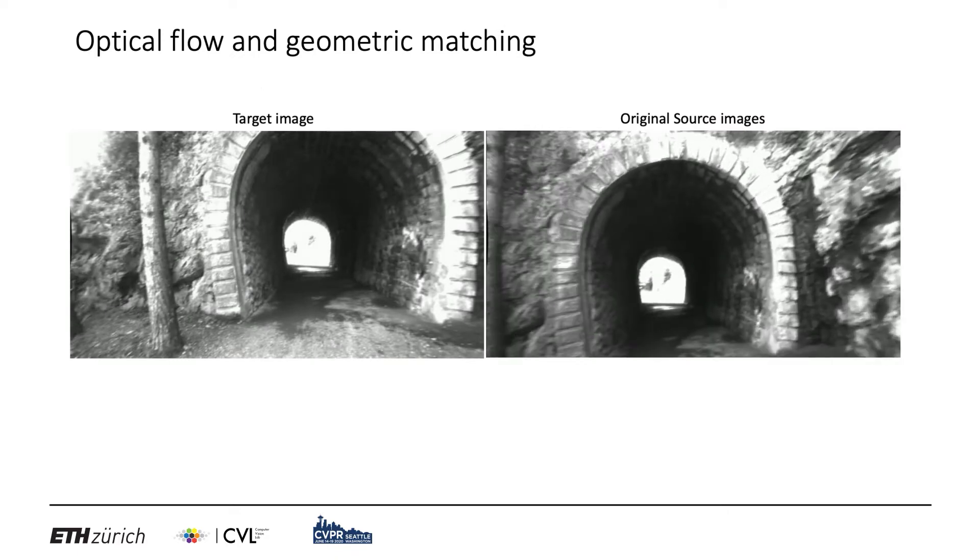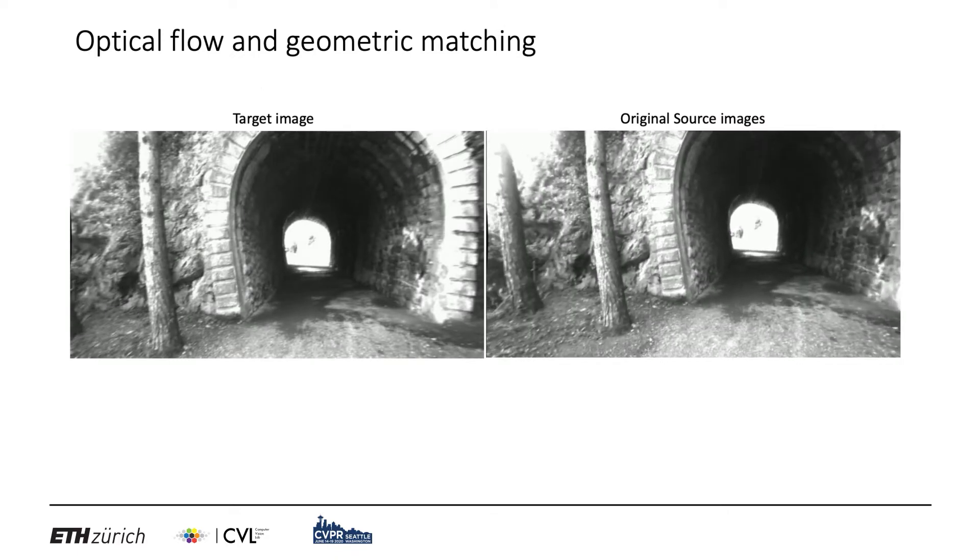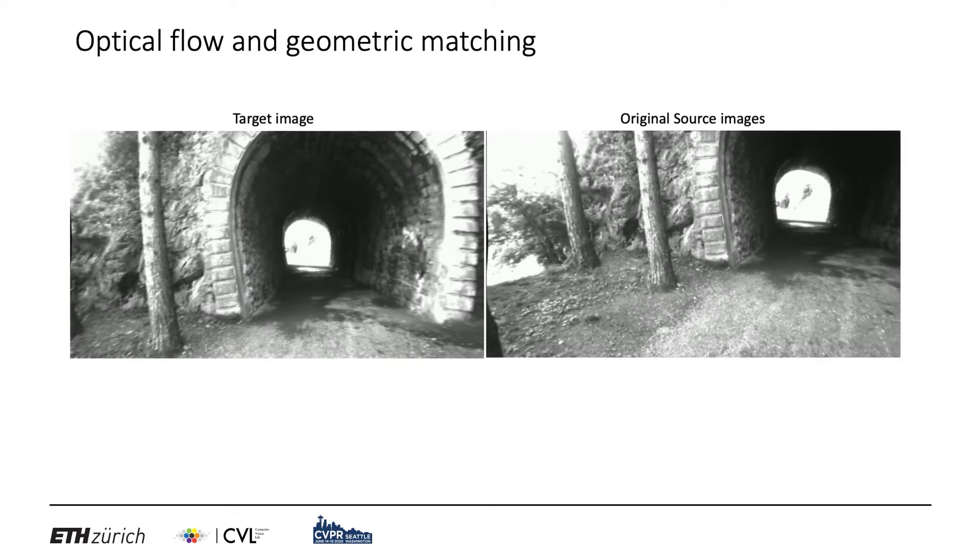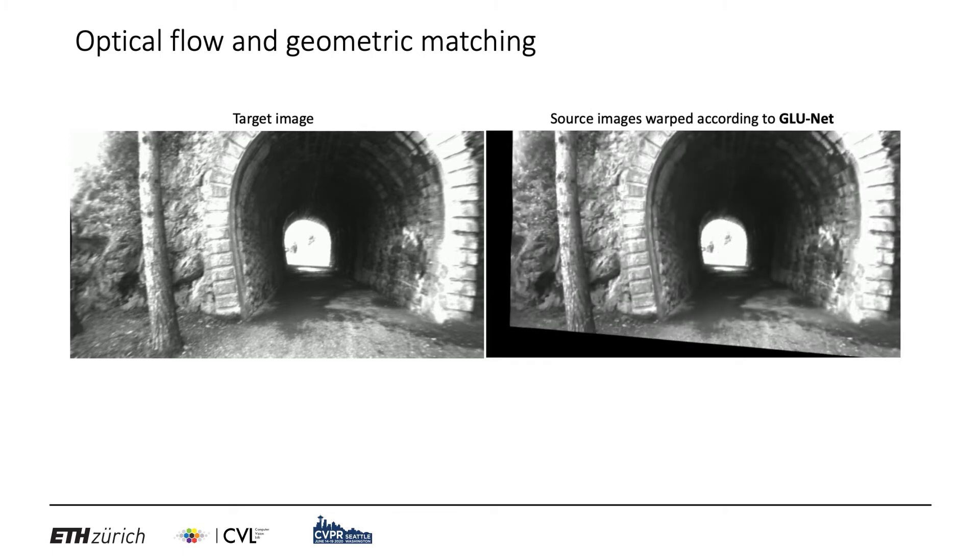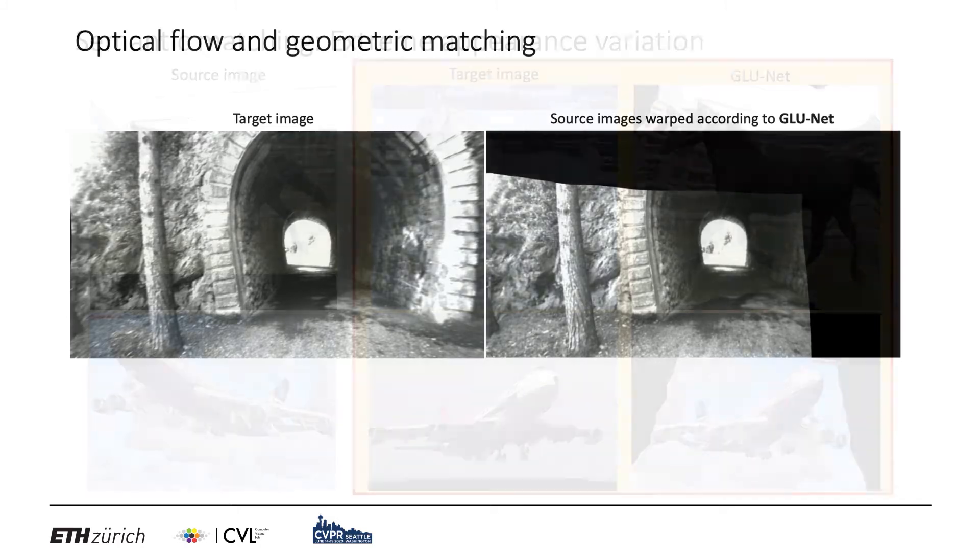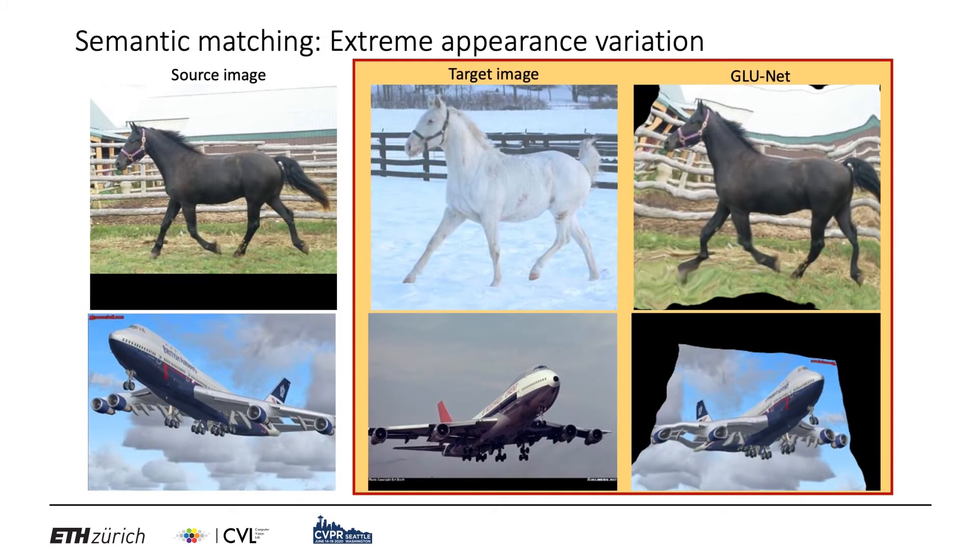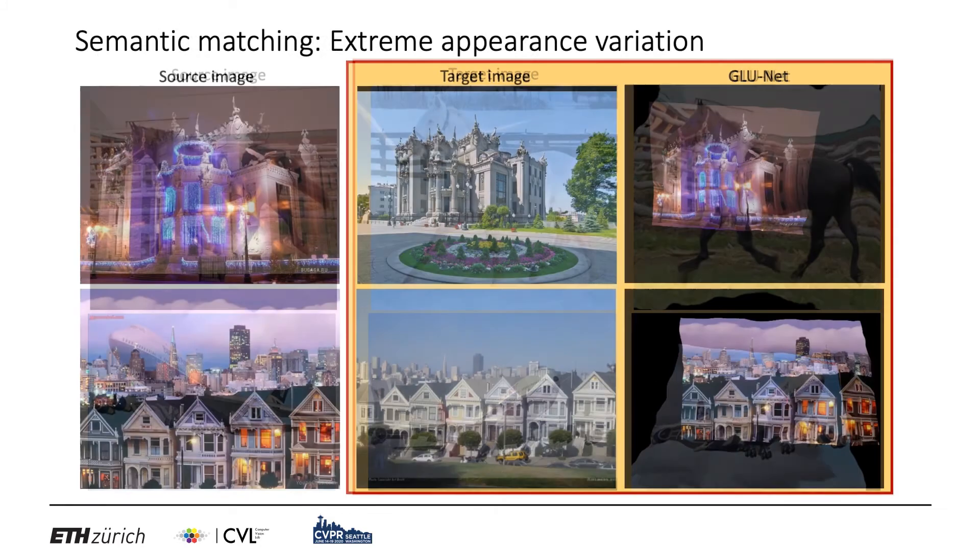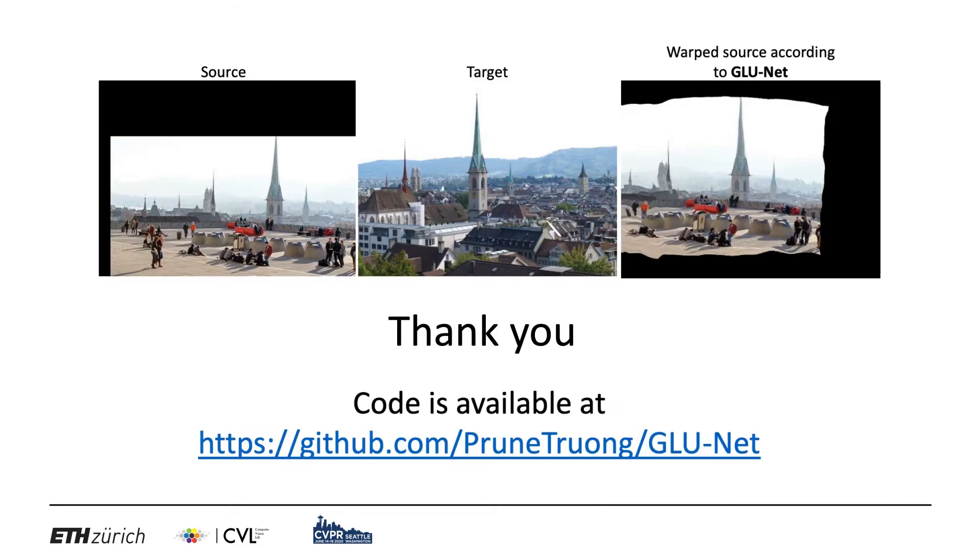This is a sequence that shows consecutive frames with real 3D motion, and so we warp the source towards the target. We see that our GLU-NET is highly accurate on both small and long range displacements. Besides, it can even match with extreme appearance variation. Thank you.